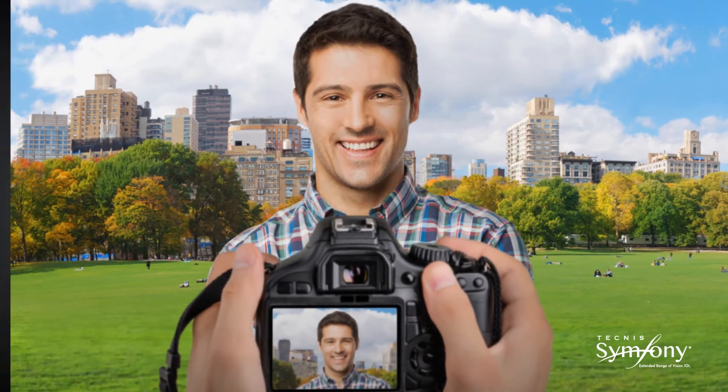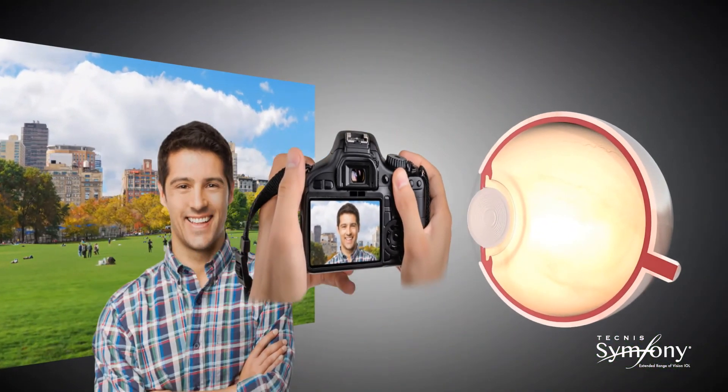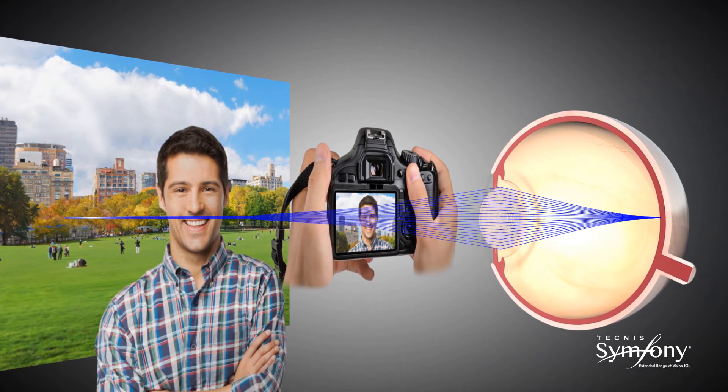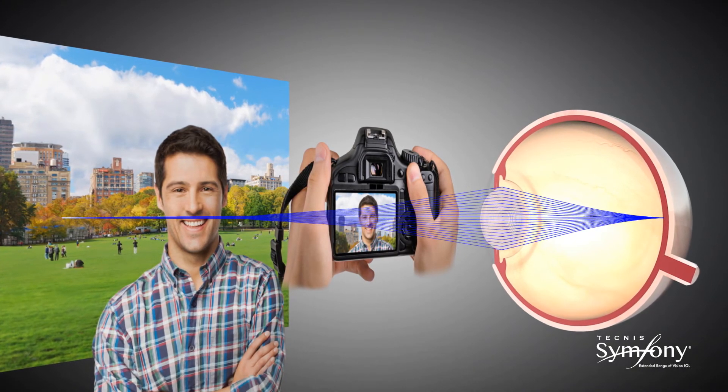Tecnis Symphony diffractive lens technology is optimized to transmit light over a range of distances. This is called constructive interference and results in an elongated focus.